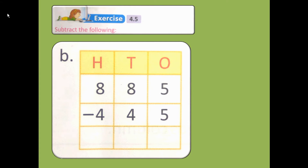885 minus 445. In the first number, 8 is in the 100's position, another 8 is in the 10's position, and 5 is in the 1's position. In the second number, 4 is in the 100's position, another 4 is in the 10's position, and the last digit 5 is in the 1's position.